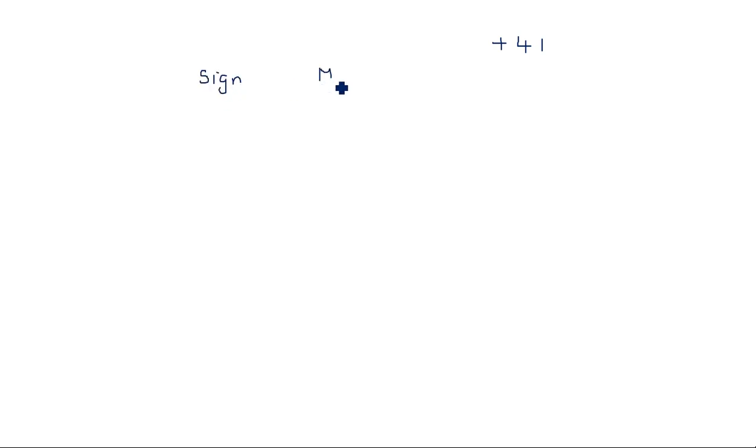Now let us represent a number like plus 41. The number 41 has a plus sign, so it is represented in sign-magnitude form, where there is a sign bit as well as the magnitude. In binary representation, a number is more elaborately represented in sign-magnitude form — a form that represents a number clearly along with its sign.